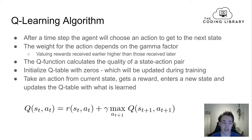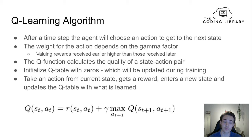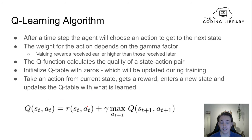First, we initialize our Q-table with zeros, which will be updated during training. Alternatively, we can initialize it empty and insert states as the agent explores. During training, the agent takes an action from the current state, receives a reward, enters a new state, then updates the Q-table with what it has learned. This is exactly what the Q-learning equation describes.